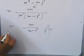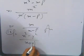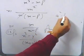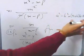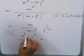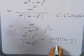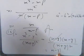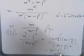Question number 14: (x² - y²) divided by (x + y)². Apply the difference of two squares formula: a² - b² = (a + b)(a - b). So the numerator becomes (x + y)(x - y). The (x + y) cancels with one factor from (x + y)², leaving the result as (x - y) divided by (x + y).